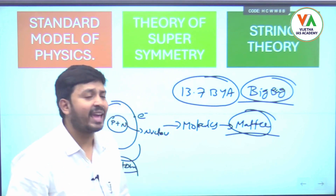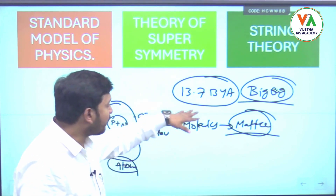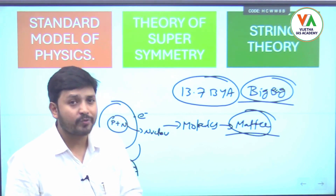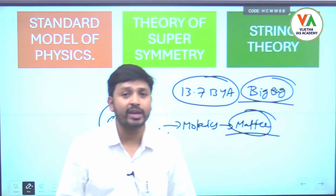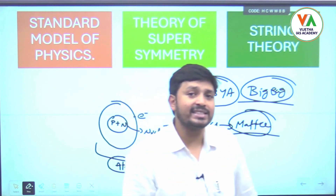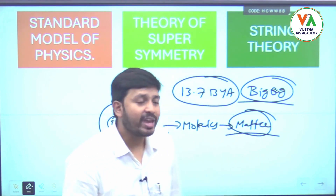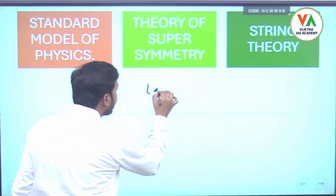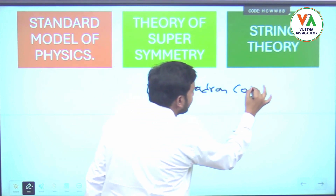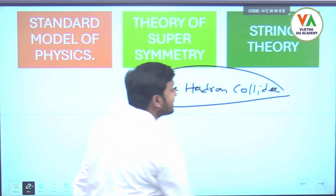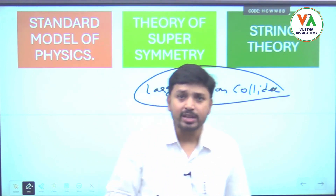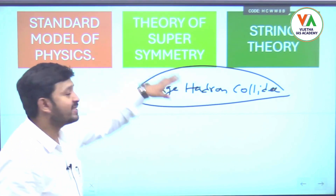To know what conditions existed just after the Big Bang — which led to the formation of our universe and the matter we see today — we need to conduct experiments. What were the conditions that led to these particles coming into existence? For that, we conducted an experiment called the Large Hadron Collider.